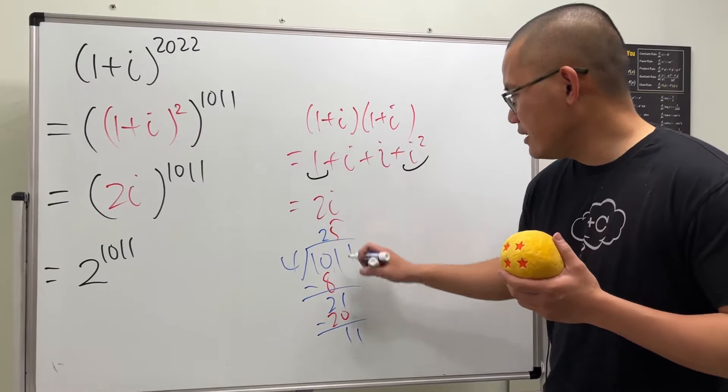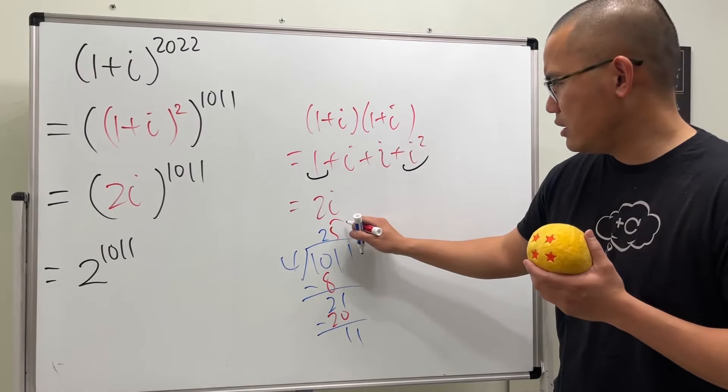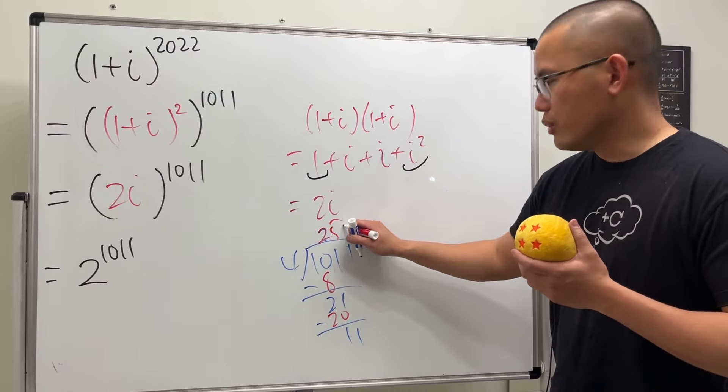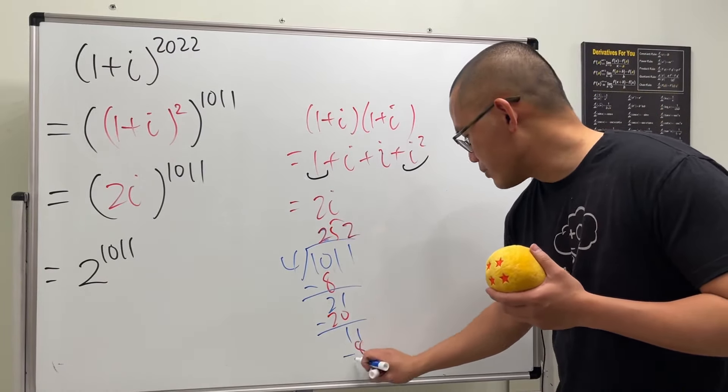And then 20, and then we get 11, and then this right here is going to be 2, and then we get 8, and then we subtract, we get 3, yeah?